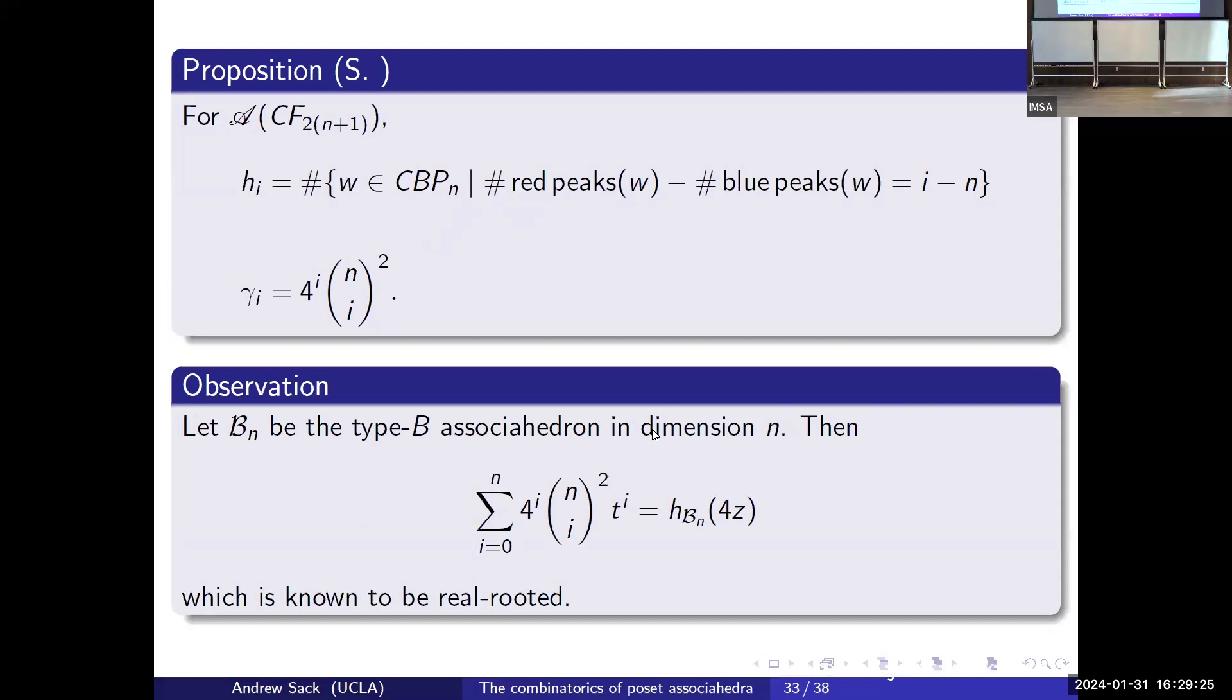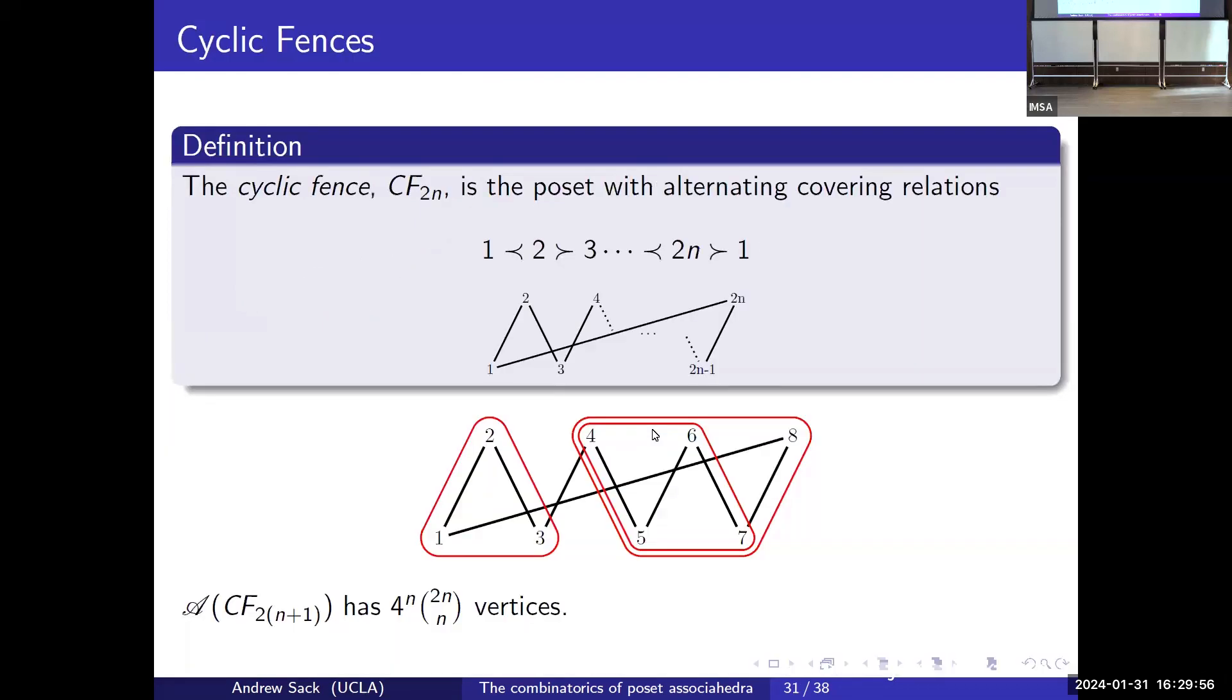We have to center this so that this is actually gamma positive. What we can show is that the gamma vector is 4 to the i times n choose i. This is actually another open problem. We have this equality of the H-vector using generating functions, but we don't have a bijection. I spent a very long time trying to find one. This is so hard, even though it seems easy. One thing that might seem familiar with these numbers is that n choose i squared comes from the H-vector of the type B associahedron. In fact, you can see that the gamma vector then is the H-vector of the type A associahedron.